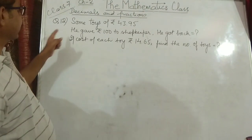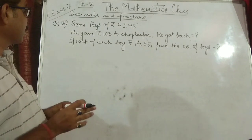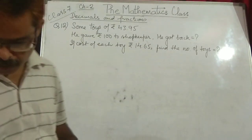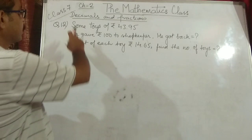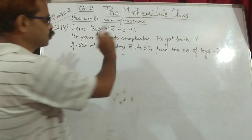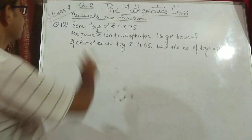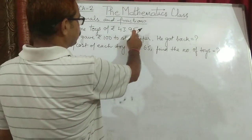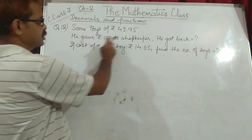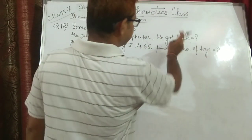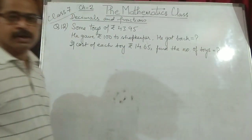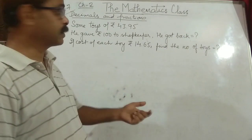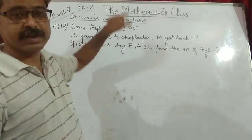That's it. Now I have taken question number 12. The question reads: Saurabh bought some toothbrushes for rupees 43.95. He gave rupees 100 to the shopkeeper. How much did he get back? Suppose you are going to the market and purchasing something for rupees 43.95 and you give the shopkeeper rupees 100 — simple subtraction.